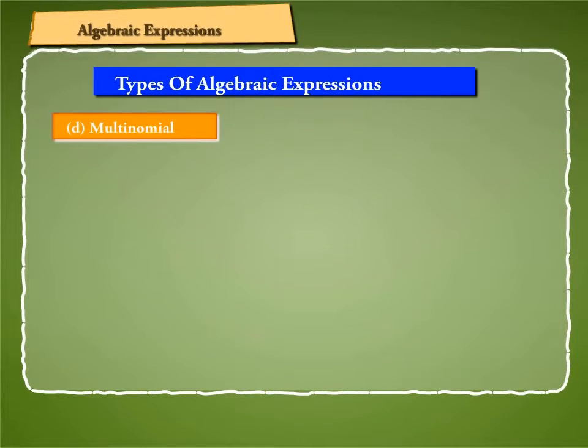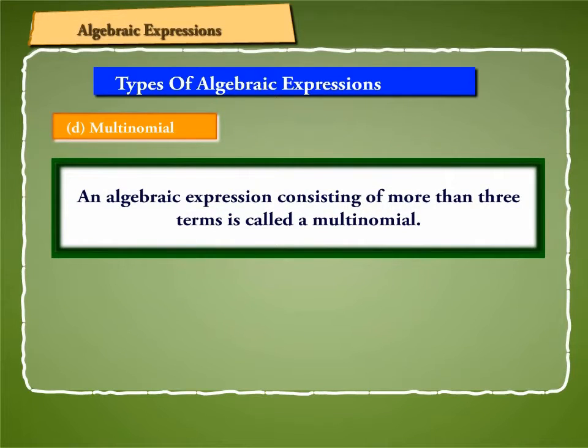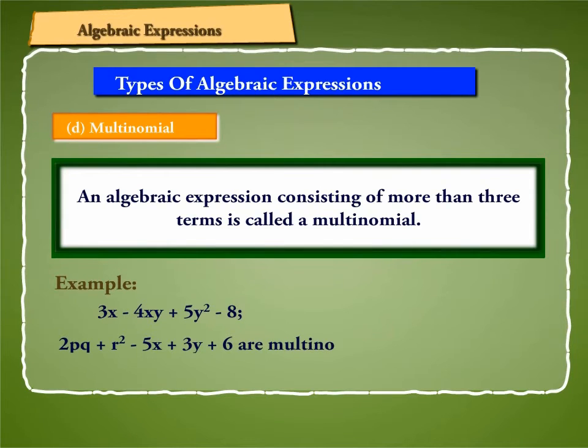D. Multinomial: An algebraic expression consisting of more than three terms is called a multinomial. For example, 3x minus 4xy plus 5y squared minus 8, and 2pq plus r squared minus 5x plus 3y plus 6 are multinomials.